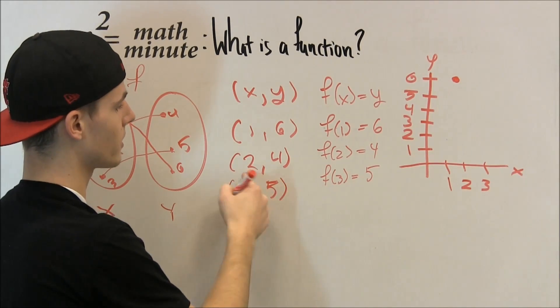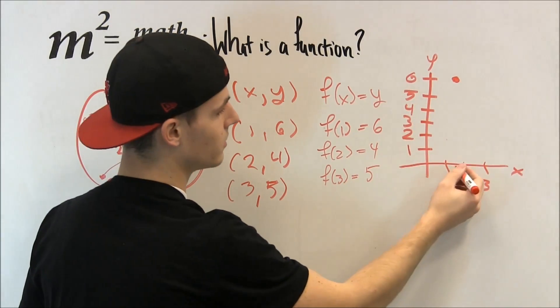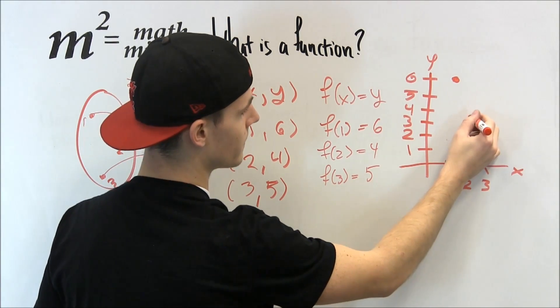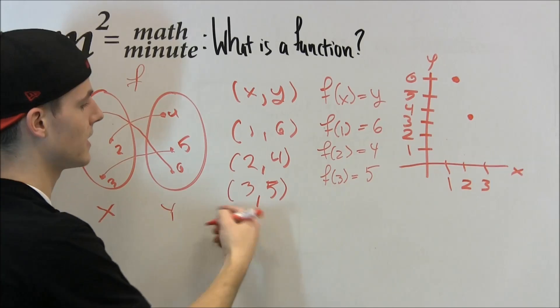Now for here, we're going to count over 2 and then up to 4. So 1, 2, 1, 2, 3, 4.